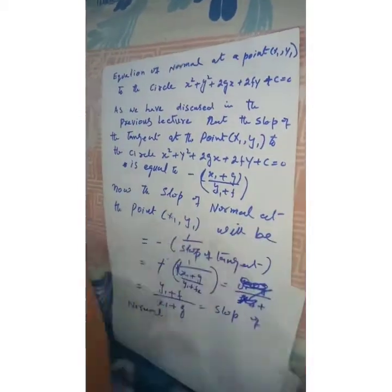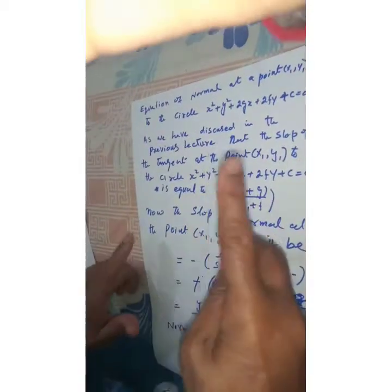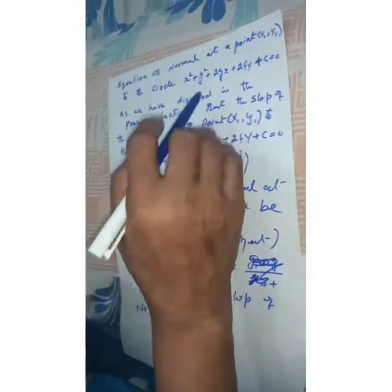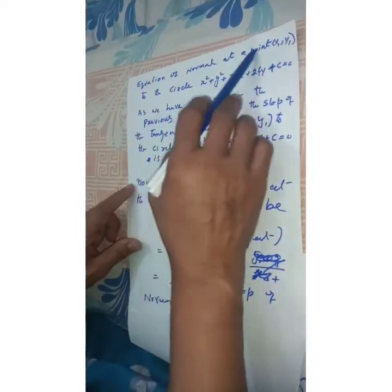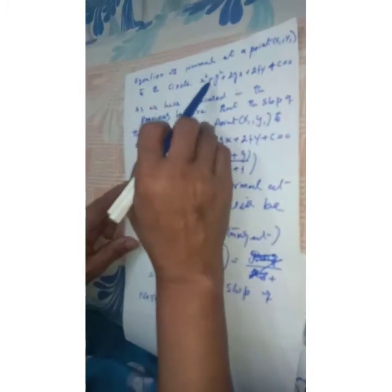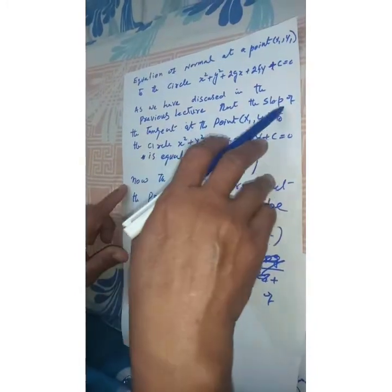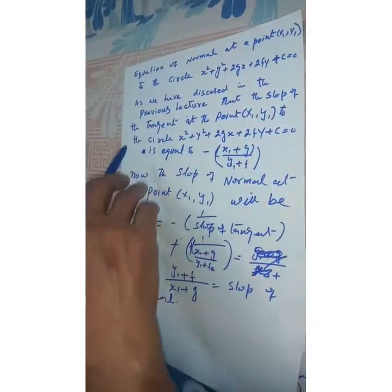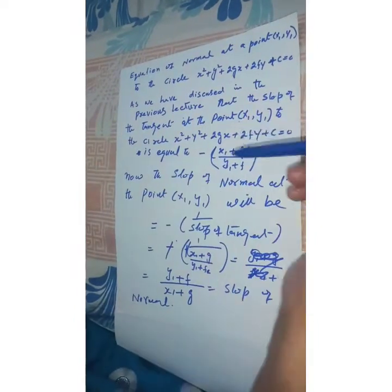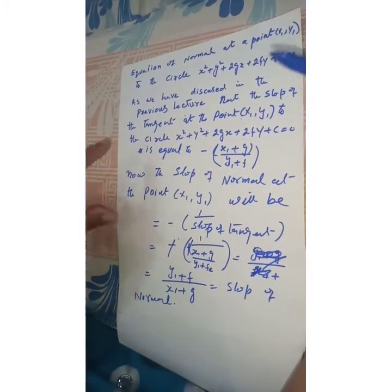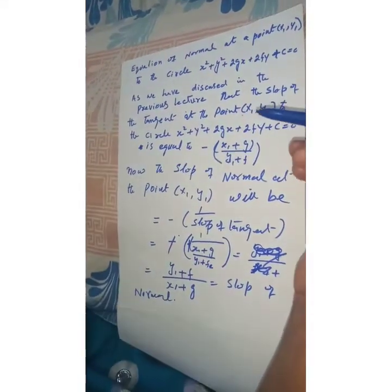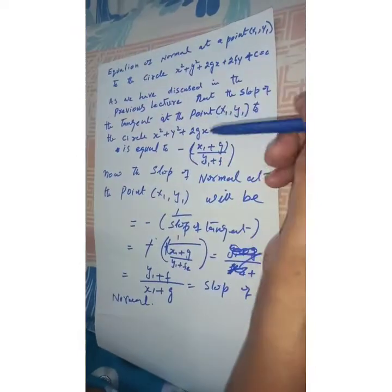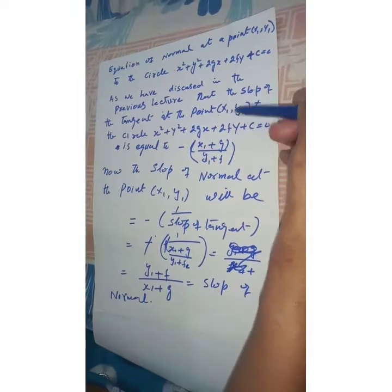Dear students, previously we derived the equation of tangent at a point (x1, y1) to the circle x² + y² + 2gx + 2fy + c = 0. Today we are doing the equation of normal at the point (x1, y1) to the same circle. As discussed in the previous lecture, the slope of the tangent at (x1, y1) is equal to minus (x1 + g) dividing by (y1 + f).